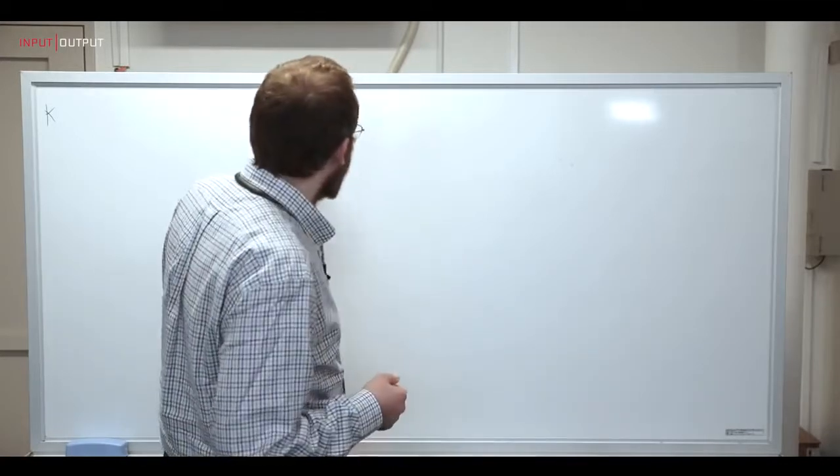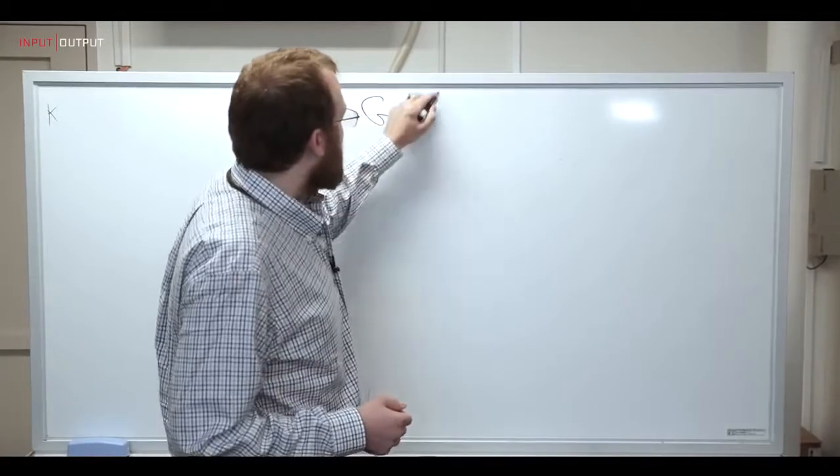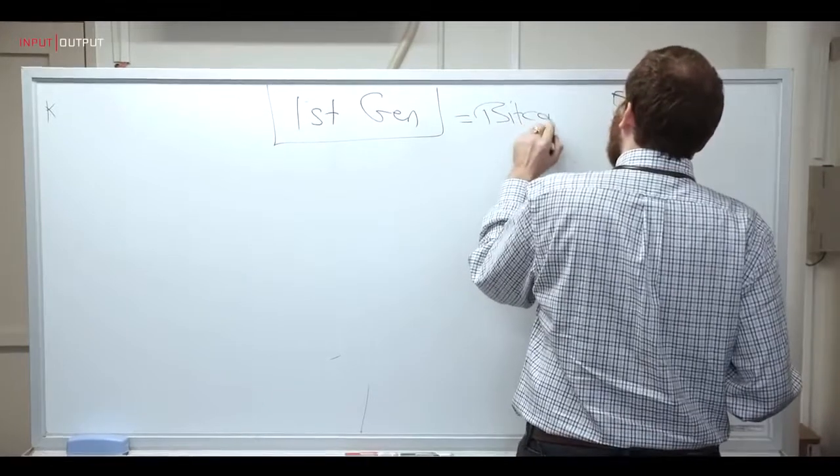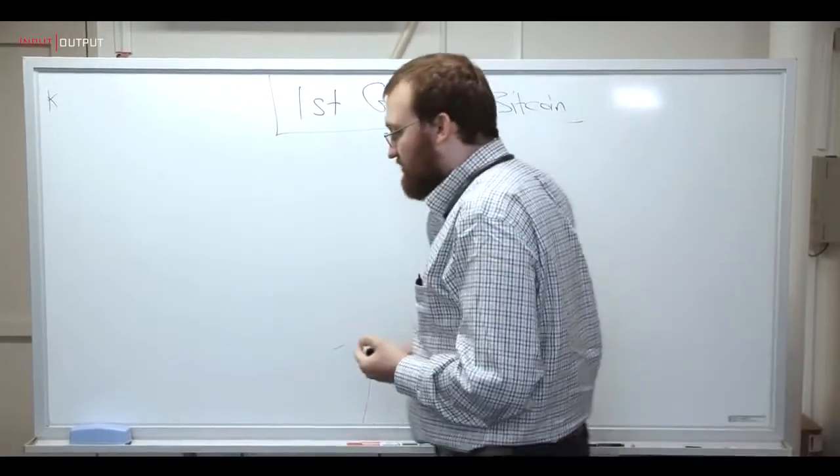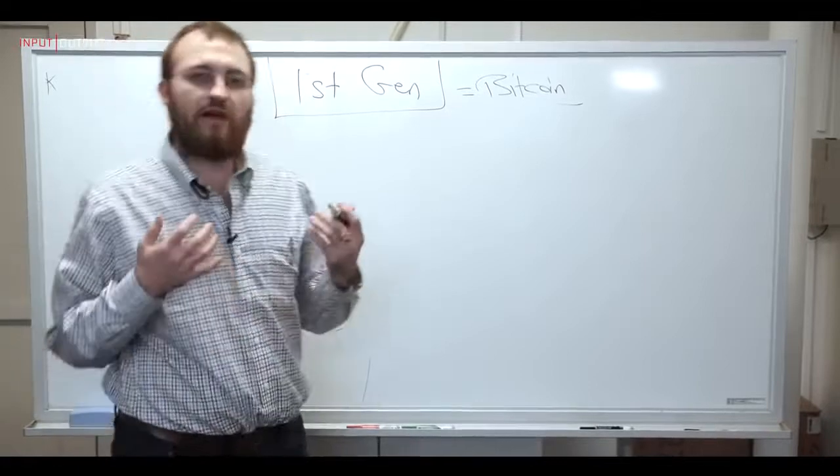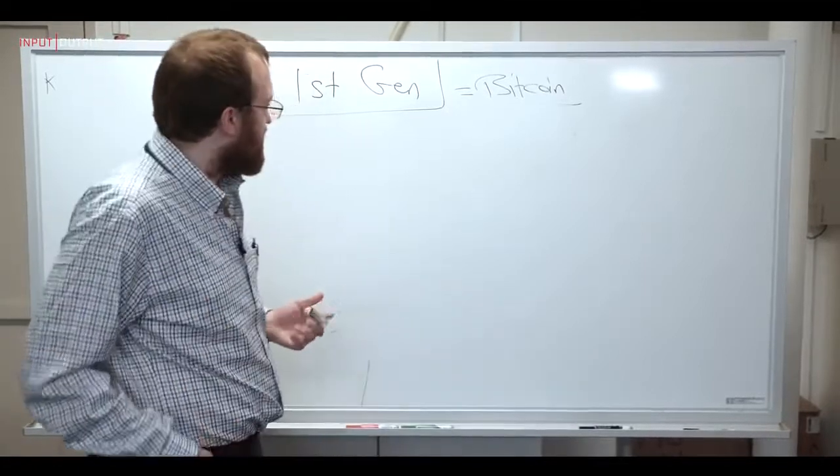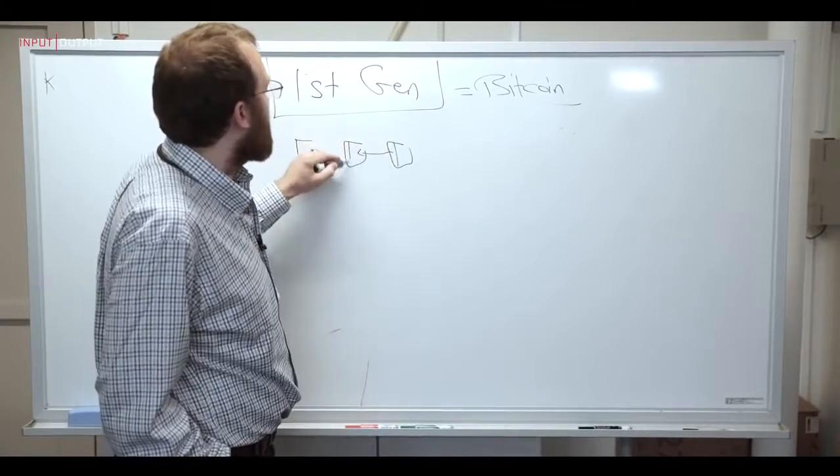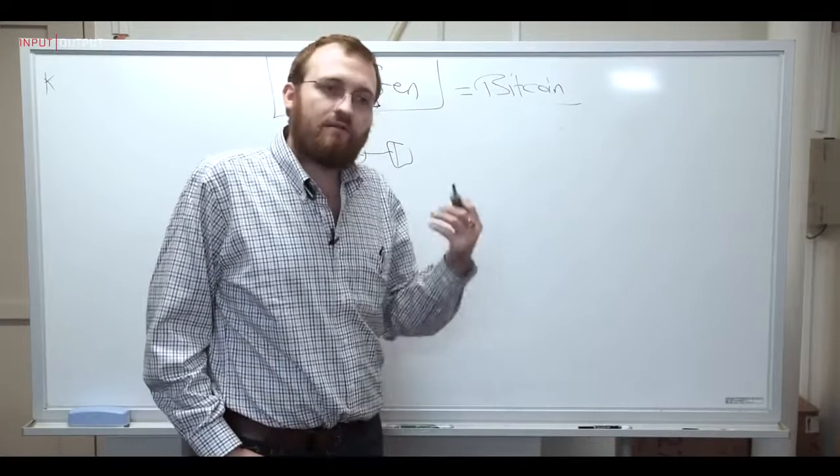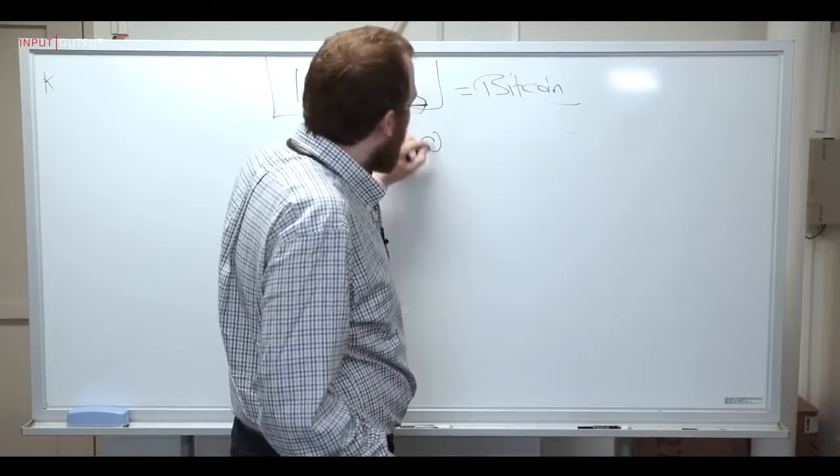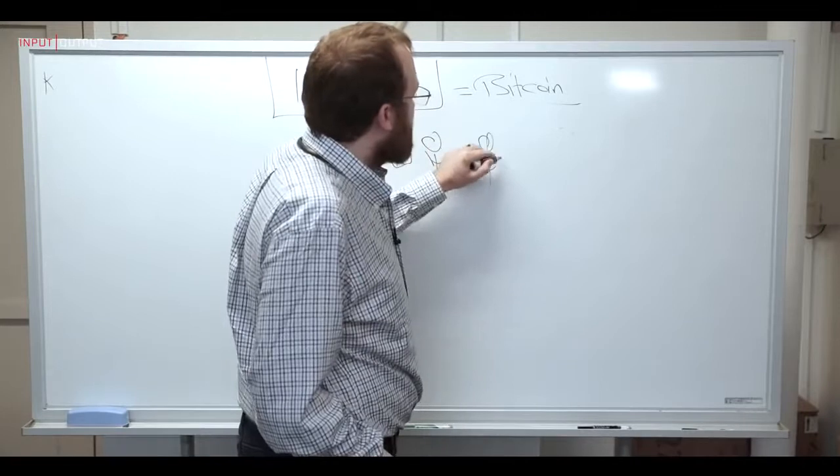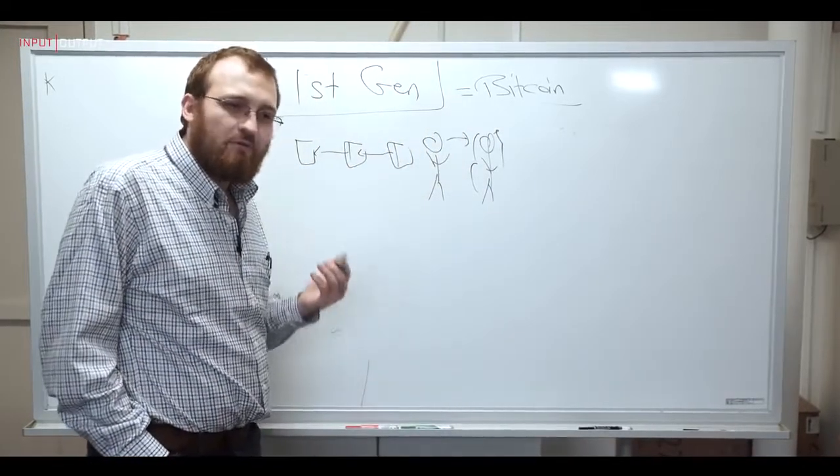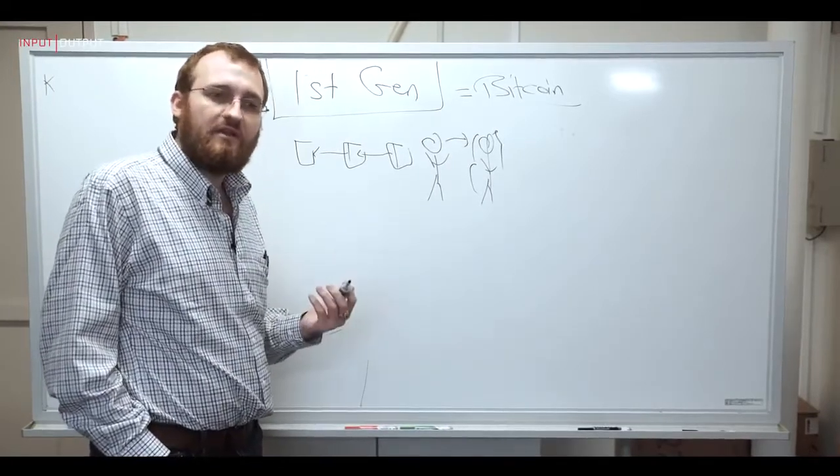So let's talk about the first generation of cryptocurrencies. First gen is Bitcoin, and the problem that Bitcoin was trying to solve was really could we create a decentralized money? Could we create some sort of token that lives on some sort of decentralized blockchain maintained by people all around the world, and that token would be scarce and tradable.